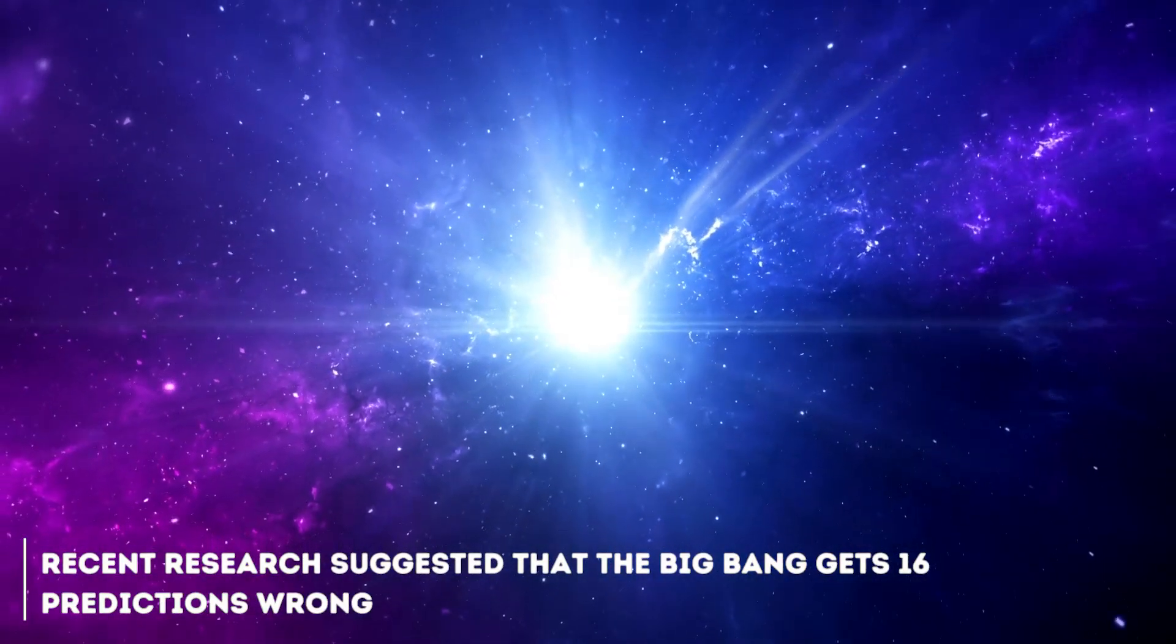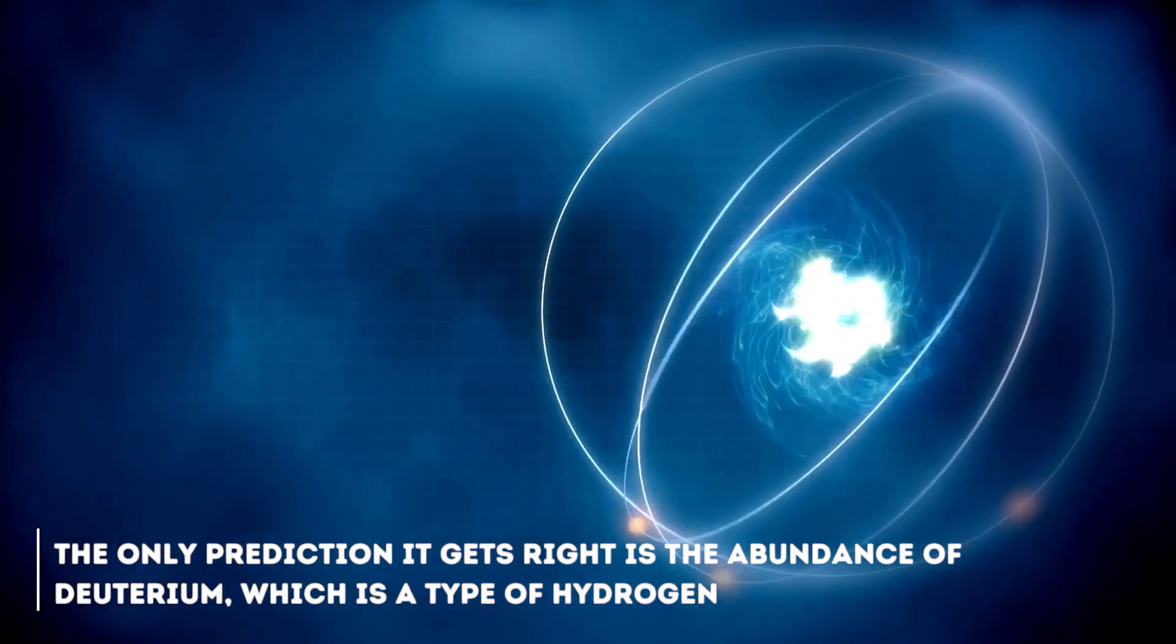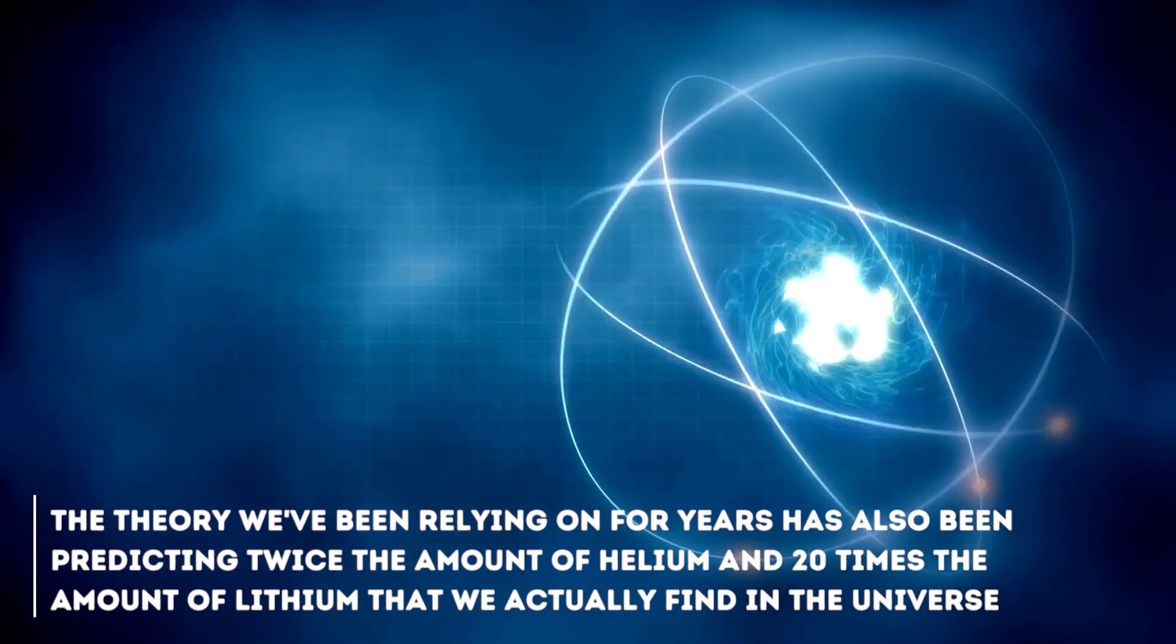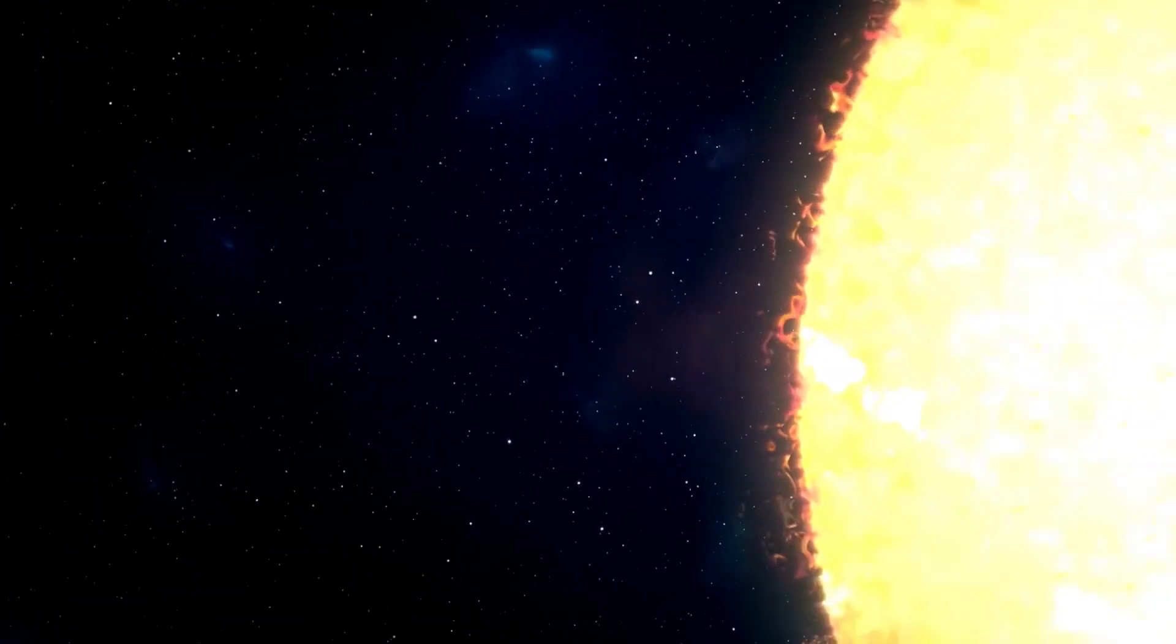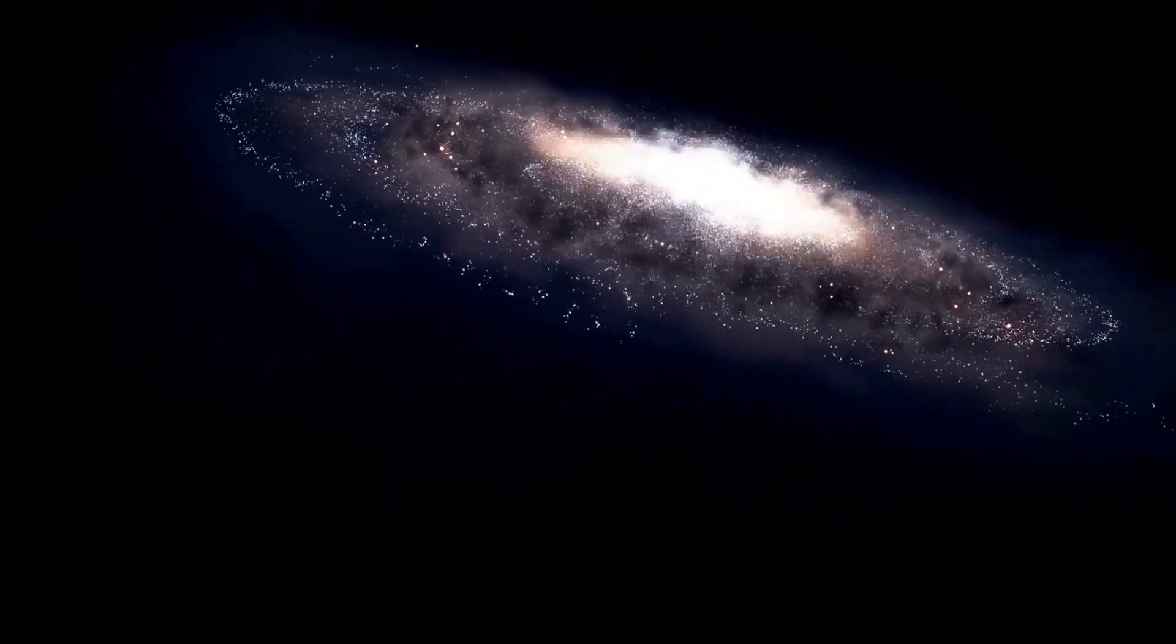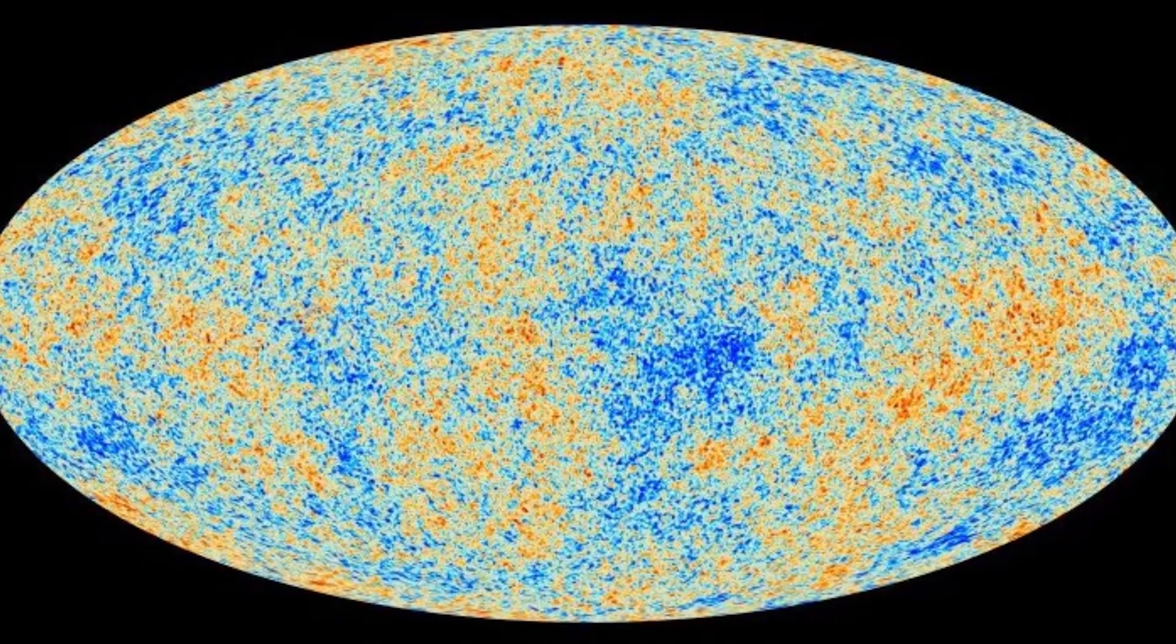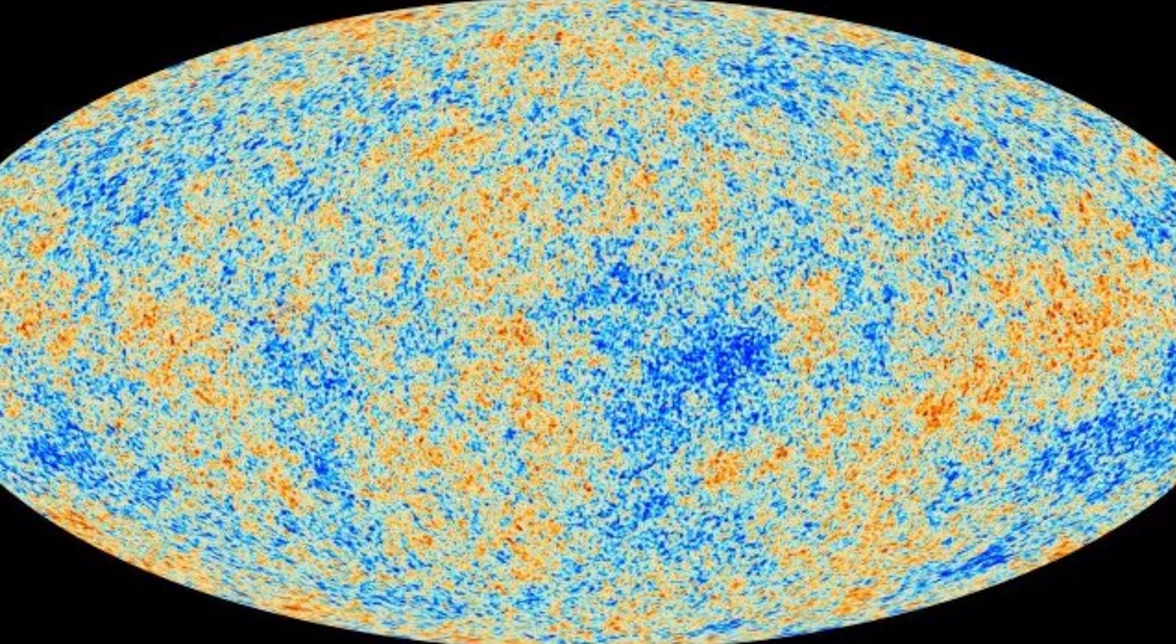Recent research suggested that the Big Bang gets 16 predictions wrong. Yes, 16. The only prediction it gets right is the abundance of deuterium, which is a type of hydrogen, but that's not all. The theory we've been relying on for years has also been predicting twice the amount of helium and 20 times the amount of lithium that we actually find in the universe. In addition, the Big Bang has trouble explaining the huge structures we observe in the universe. According to the theory, these structures are simply too large to form in the time since the beginning of the universe. The theory stumbles a bit in predicting the density of matter in the universe. And here comes a curious fact. Those supposedly non-existent asymmetries in the cosmic microwave background turned out to exist. It's like a twist in the cosmic plot.